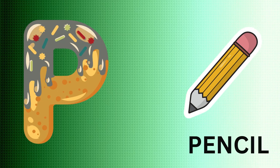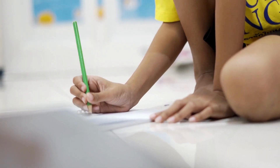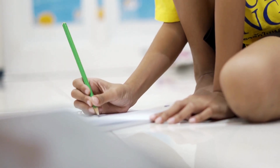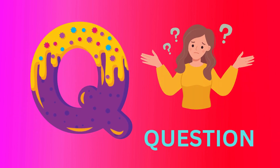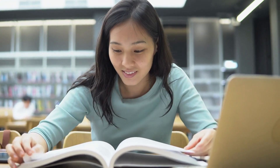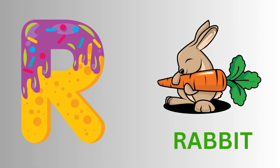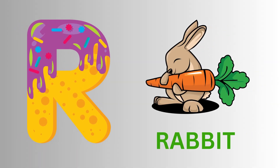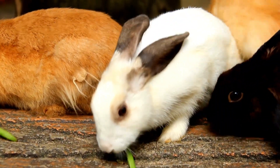P is for Pencil. Pencil, Pencil. Pencil. Q is for Question. Q, Question. R is for Rabbit. Rabbit, R.